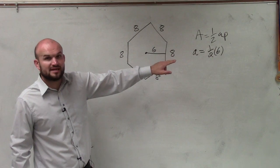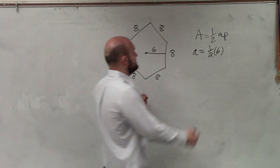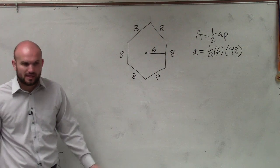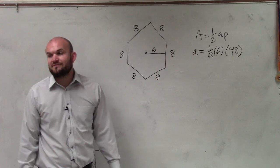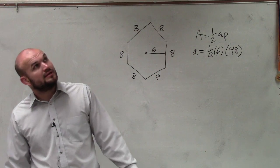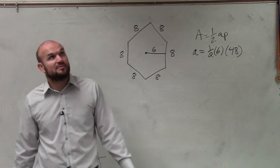So you have one-half times 6, and then times the perimeter, which is 48, because 6 times 8 is 48. Now I just do one-half times 6 is 3. 3 times 48 is going to be 96, and then so it would be 144.